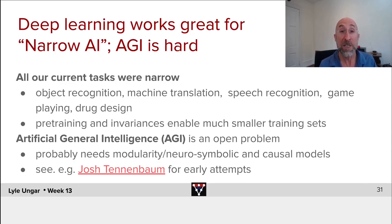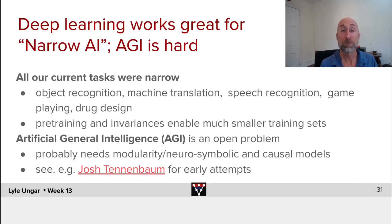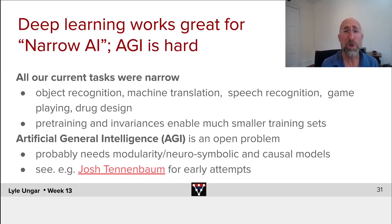We've seen that by using pre-training, by using auto-encoders, by using transformers, by building in variances like filters for CNNs, we can train these things on much smaller data sets than were required before and do really well. Superhuman performance on a number of very narrow, focused tasks.